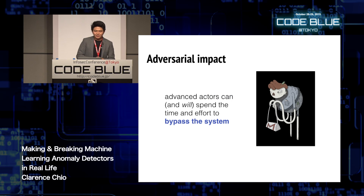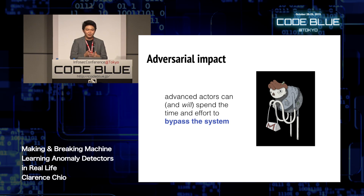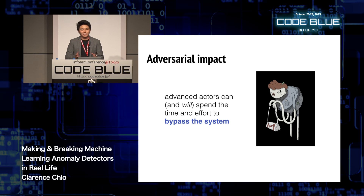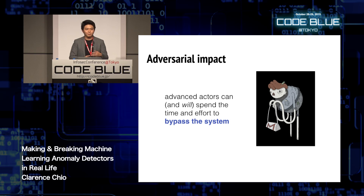Lastly, there's the adversarial impact. Running a machine learning model that changes over time will be susceptible to attacks by adversaries. If you have a static rule set, attackers fly under the radar by sending just below the threshold. With a machine learning model it's slightly more complicated. Advanced actors can and will spend time to bypass your system — we'll assume they have global knowledge, knowing your system is trained with a clustering model and trained weekly or monthly.